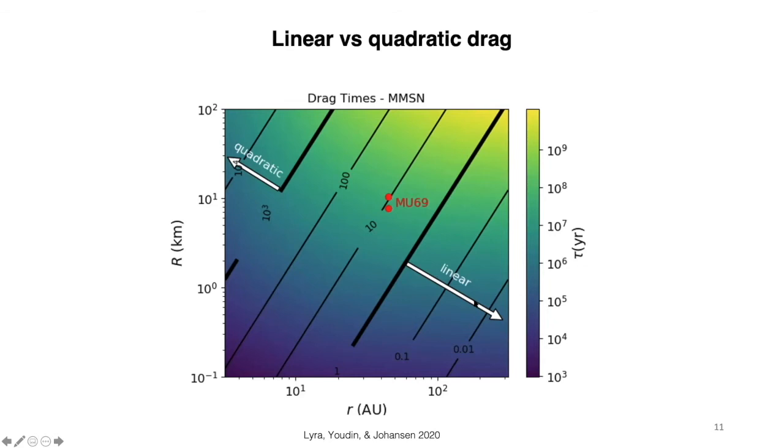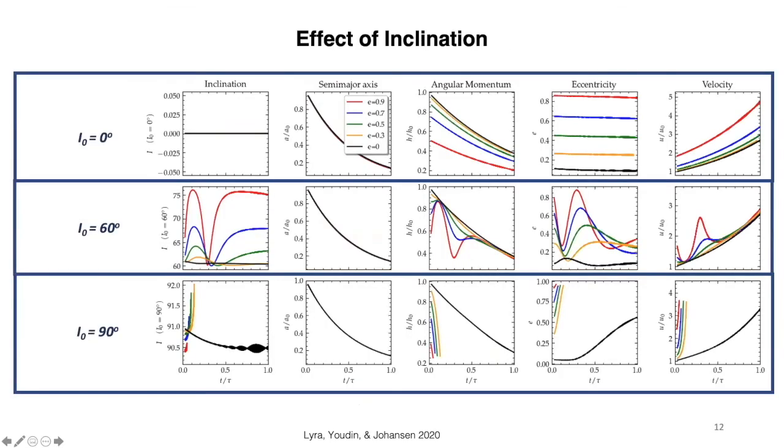But what is happening in a linear drag is that what you gain on one side of the orbit, you lose on the other side. So, the net loss in angular momentum is zero.